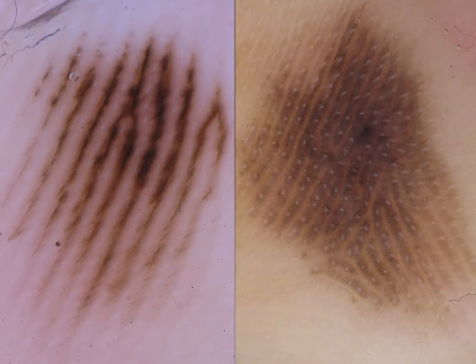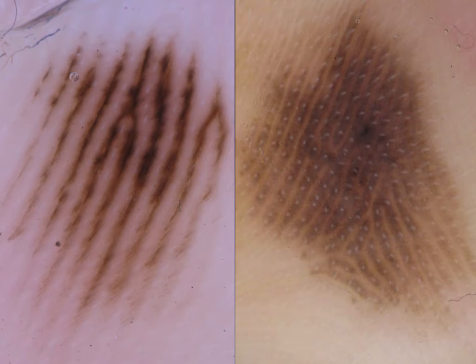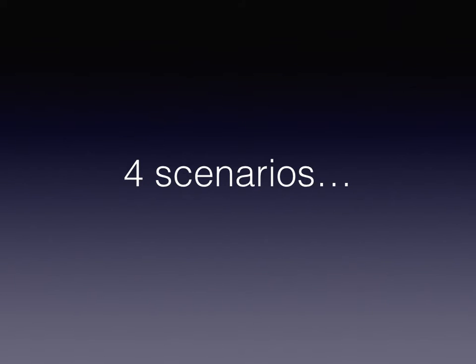Our new findings do not question at all the traditional knowledge that a parallel furrow pattern is associated with nevus and parallel ridge with melanoma. In contrast, they confirm this notion and complete this suggestion. I would like to propose how to manage pigmented lesions on the acral skin through four different scenarios.